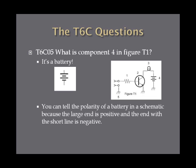What is component four in figure T1? Component four has got some parallel lines, some longer than others — that symbol is a battery. You can tell the polarity of the battery on a schematic because the large or longer line end is positive, and the end with the short line is negative. So that parallel series of lines is a battery.